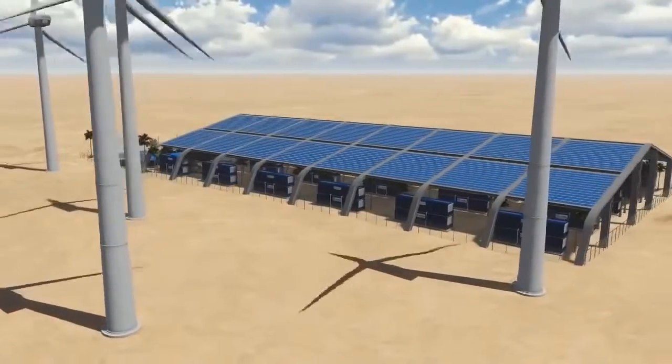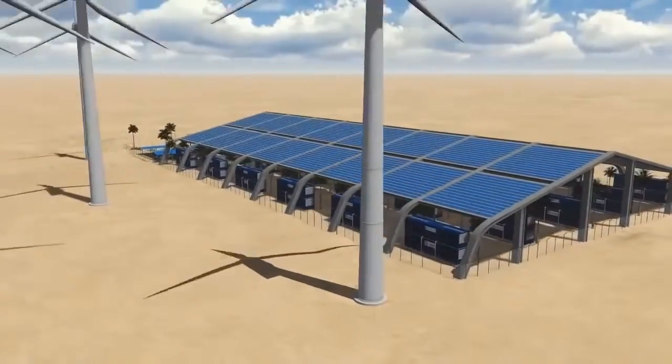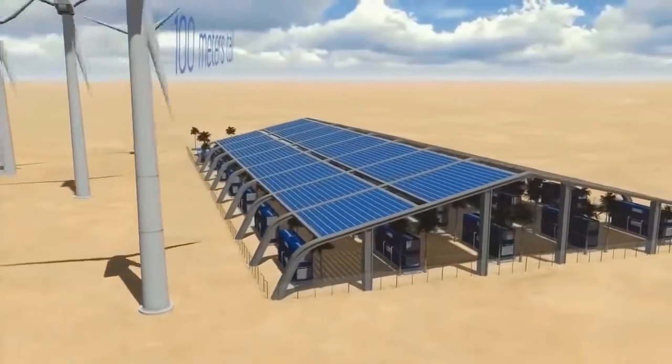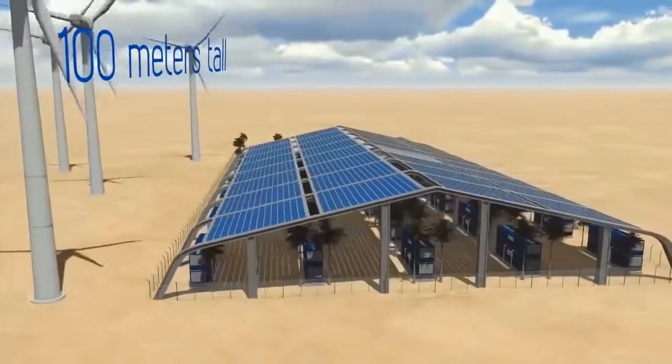This water station can generate water from the humidity in the air with as little as 25% relative humidity and at a temperature as low as 5 Celsius.